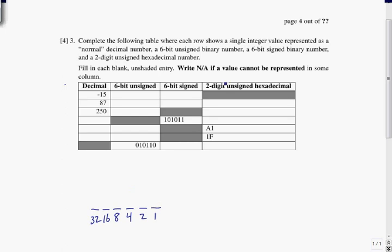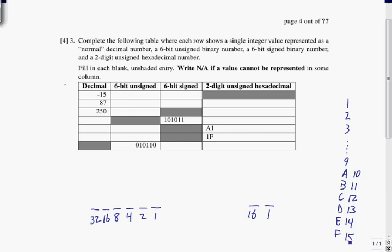So the biggest we can get to in 6-bit signed is 31, which would be all 1s in the lower bits. For a 2-digit unsigned hexadecimal number, we have a 1s place and a 16s place. To fit a number like 15 into a single digit, we use letters: 1 through 9, then A, B, C, D, E, and F, which represent 10 through 15 respectively.